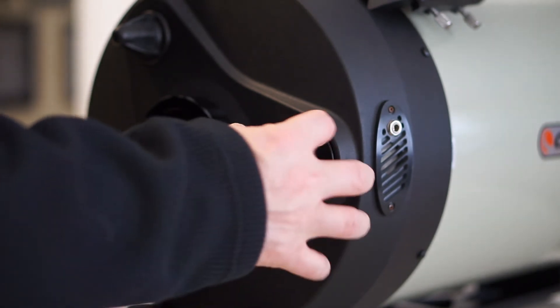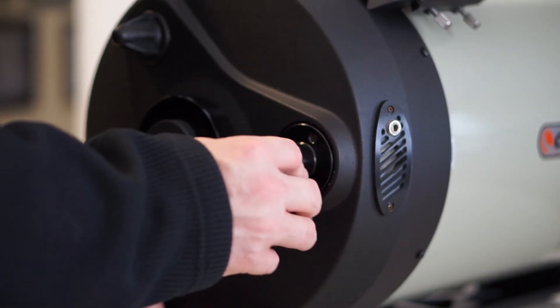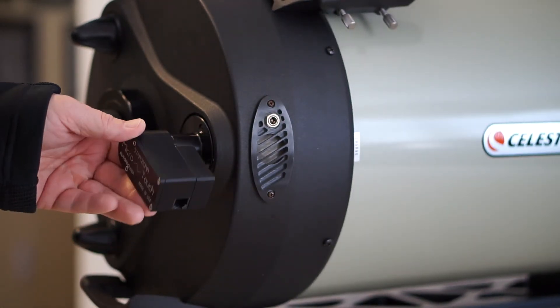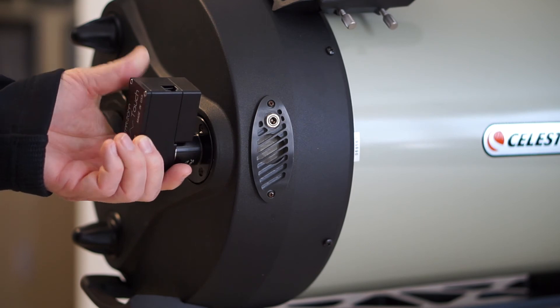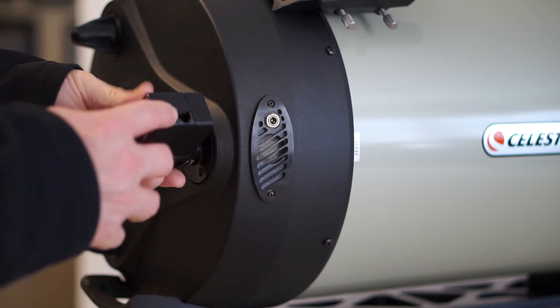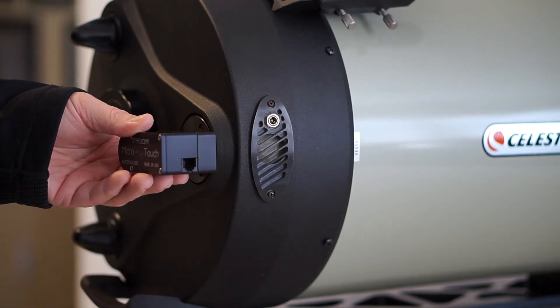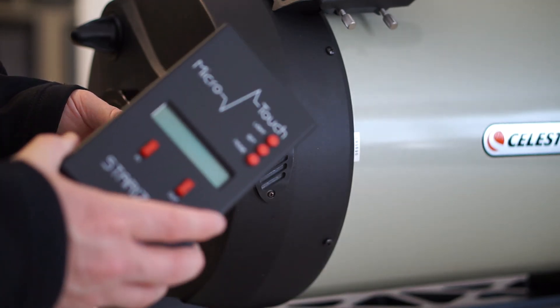Once there's no silver band on the focus knob itself, then you want to rotate the focusing motor to where you can actually get to the RJ11 connection that's on the end because that plugs into the supplied hand controller.